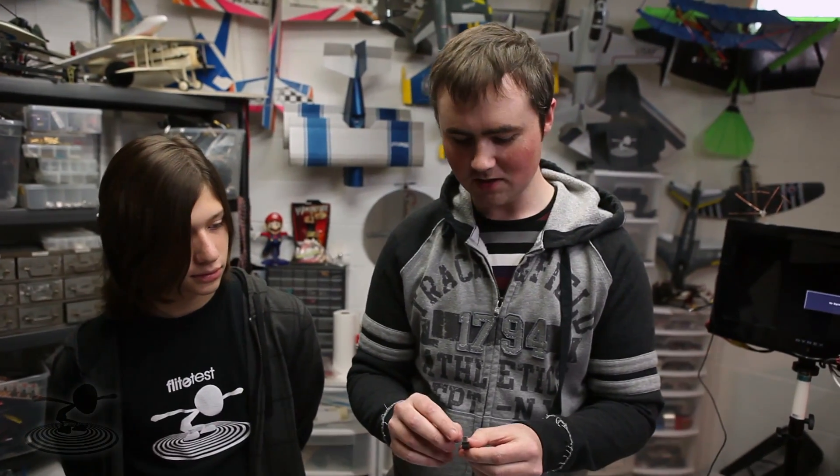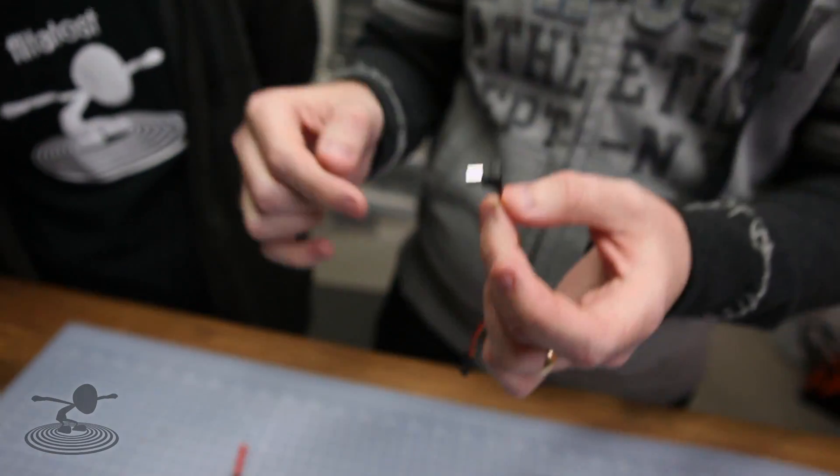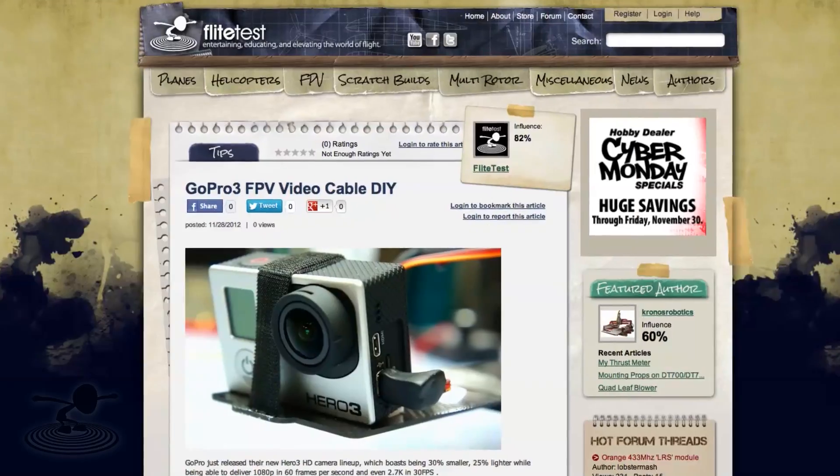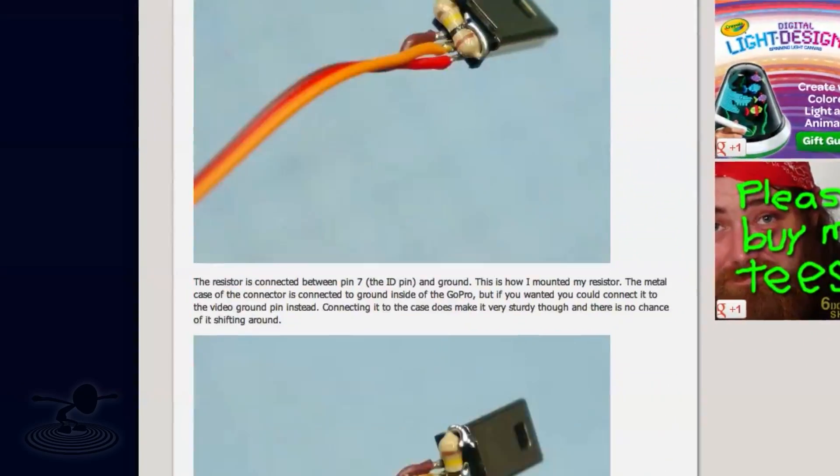You just pay a Chinese guy to send you one of these connectors and then you solder everything up and there's a guide. Solder. Solder. The link in the bottom here, there's a flight test article where you can read all about it. I wrote a really detailed guide so you can make it yourself. So make your own cable by clicking this link, following it and then go fly FPV. What's FPV?